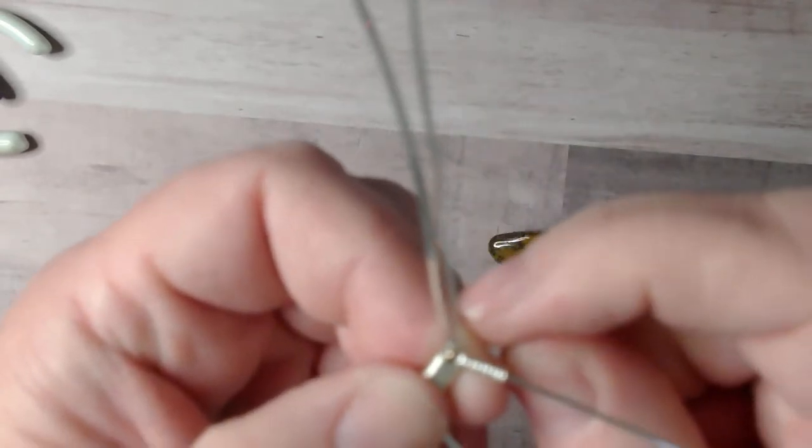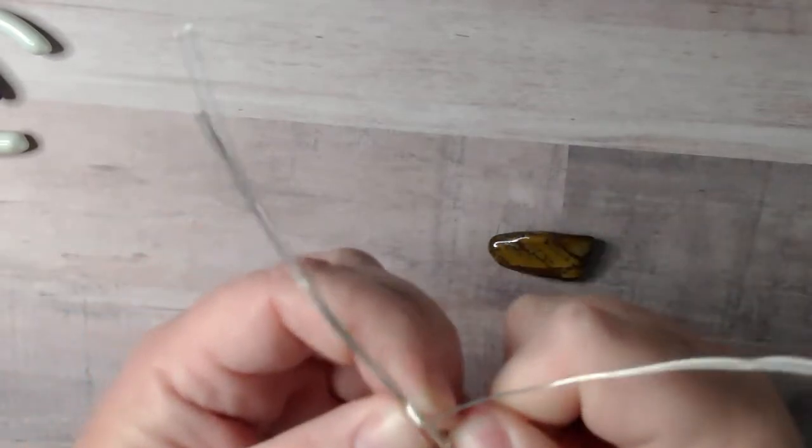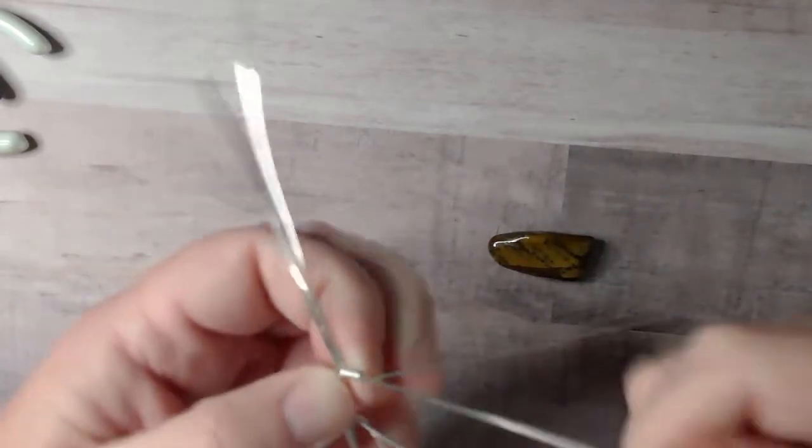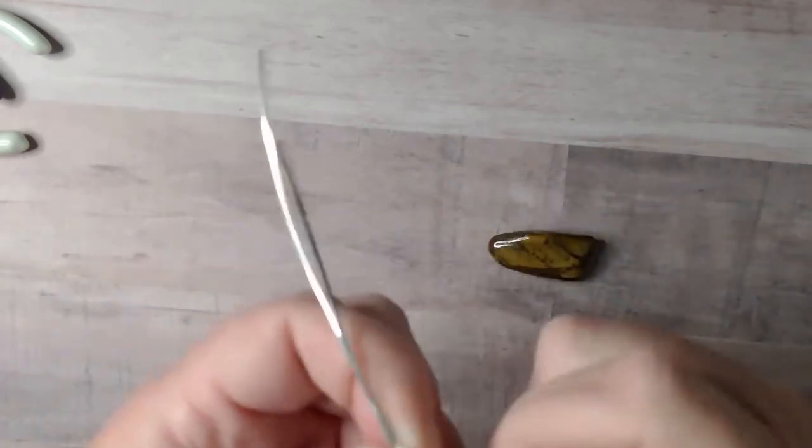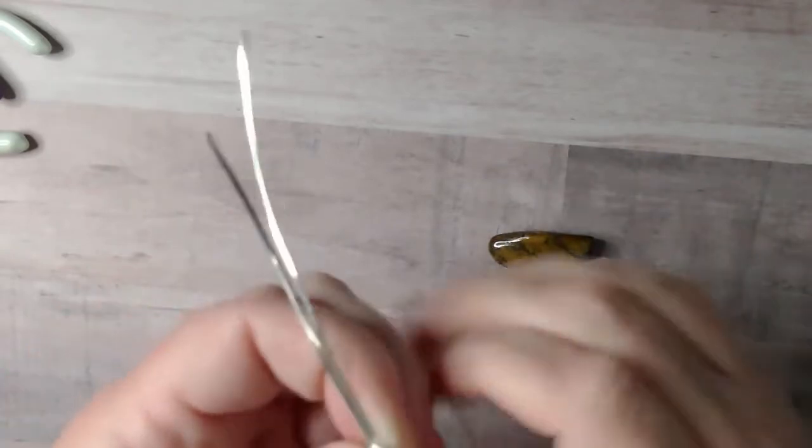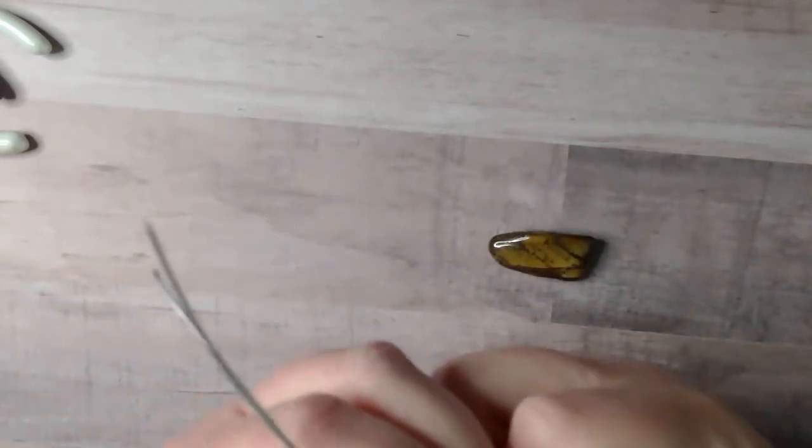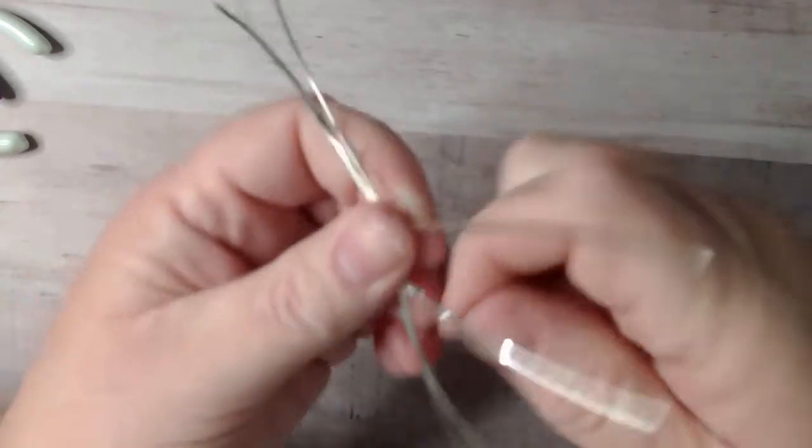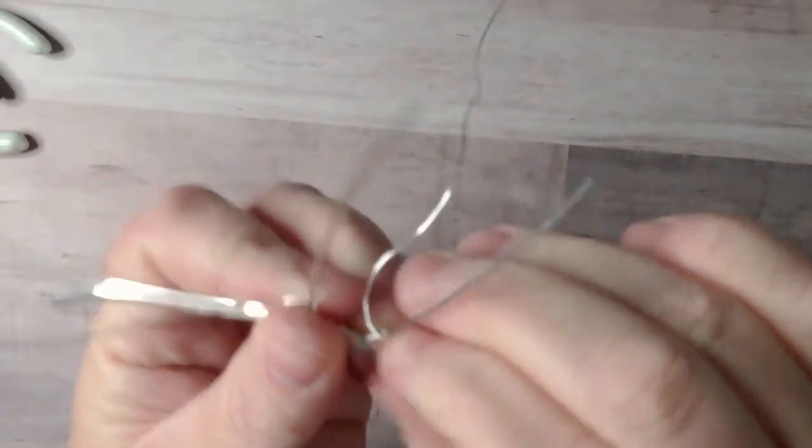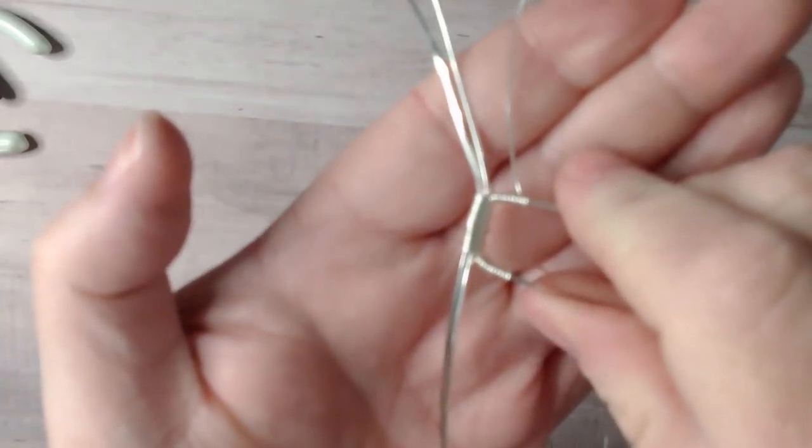Now we have ten wraps around this wire, and I'm going to do the same thing on this side. One, two, three, four, five, six, seven, eight, I'm going to move that out of the way. Nine, and ten. So there we go. Now we're even on both sides with a wrapped wire.